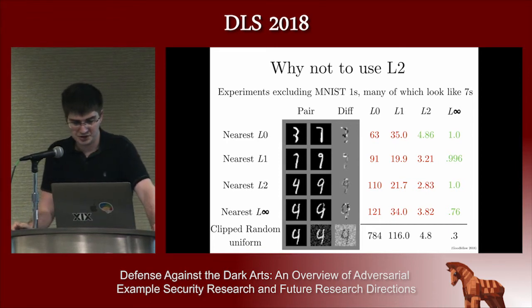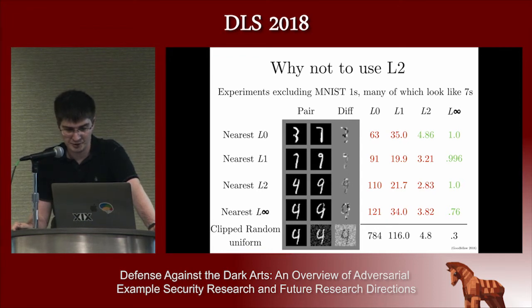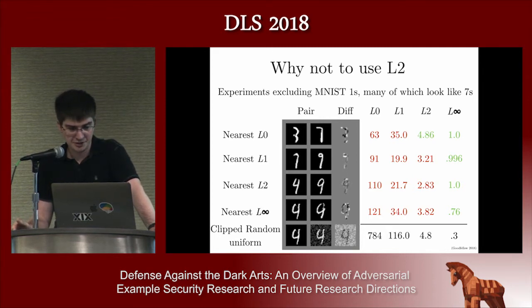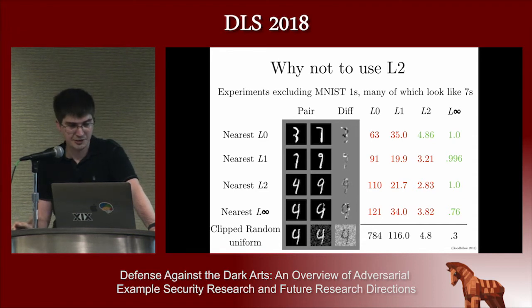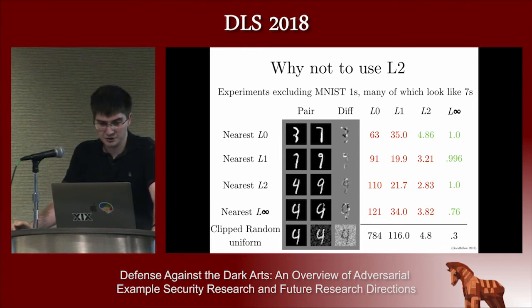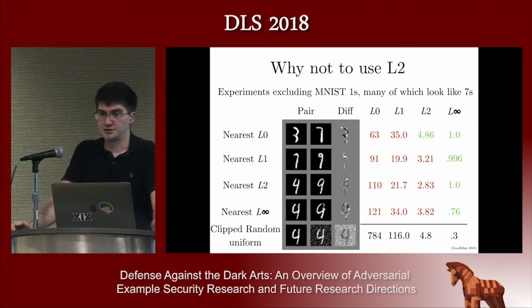When we define the norm ball games, we usually use the max norm in pixel space, and I want to explain clearly why. The main important thing is that we really shouldn't use the L2 norm, and I'm illustrating that with some MNIST examples. In each row I show you a pair of MNIST examples and then show the vector of differences between them. In the first row I show the two MNIST examples nearest to each other searching over all MNIST classes except ones — the nearest two digits in terms of L0 distance are a three and a seven.